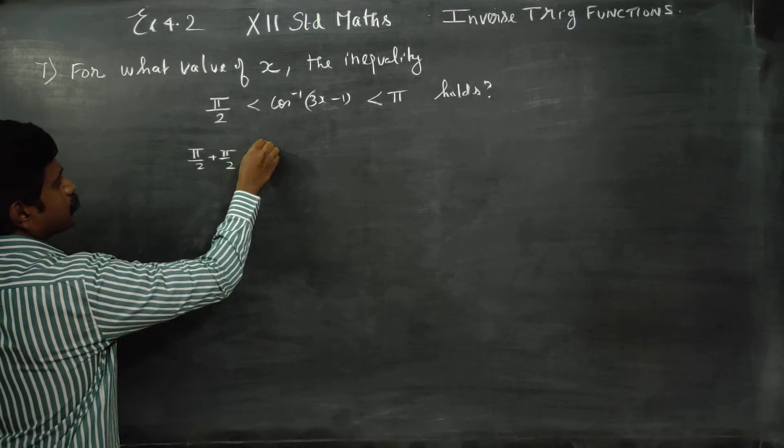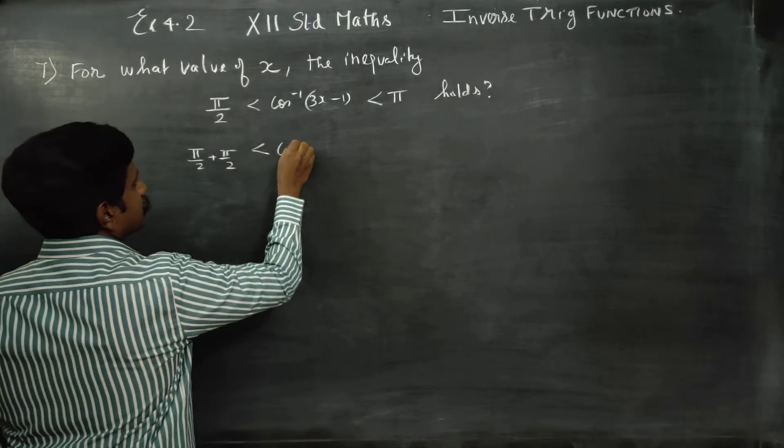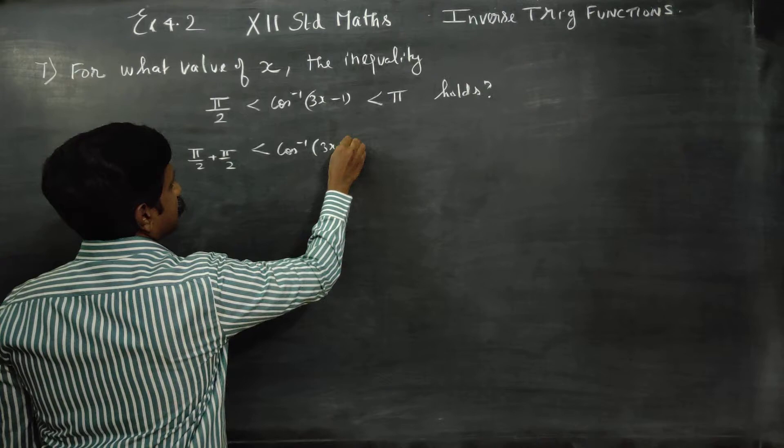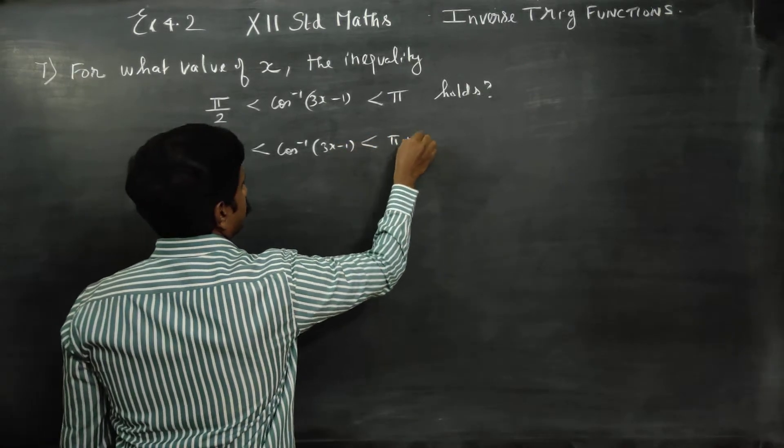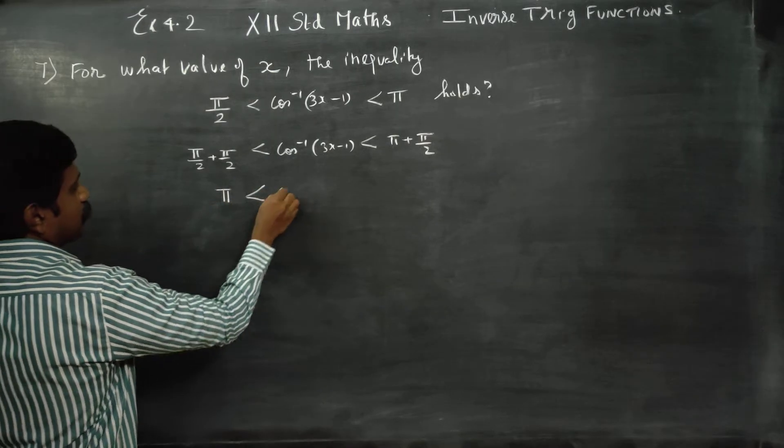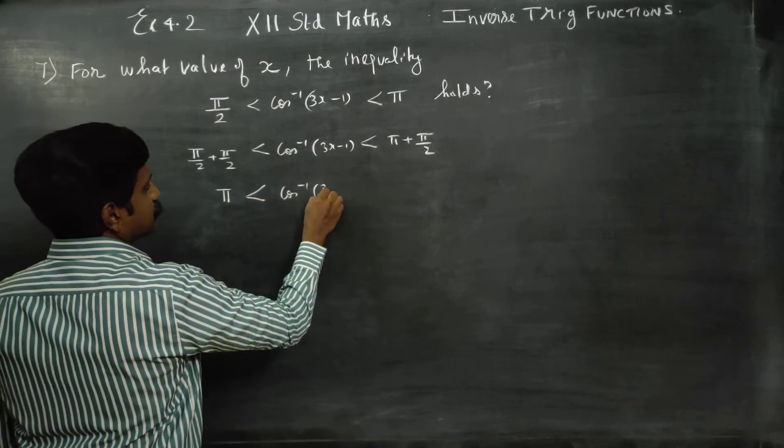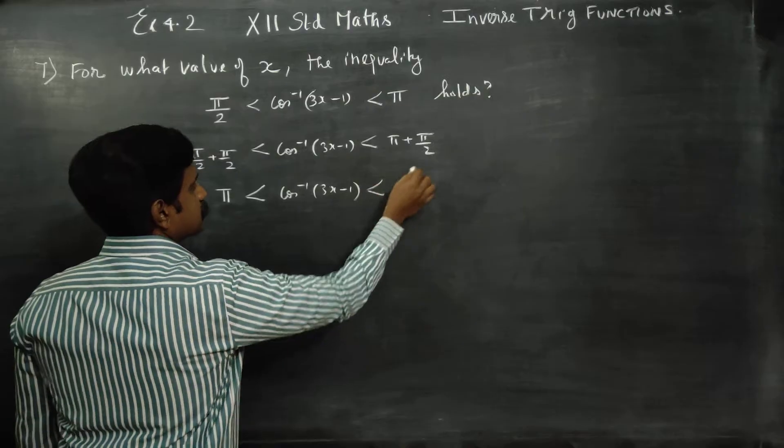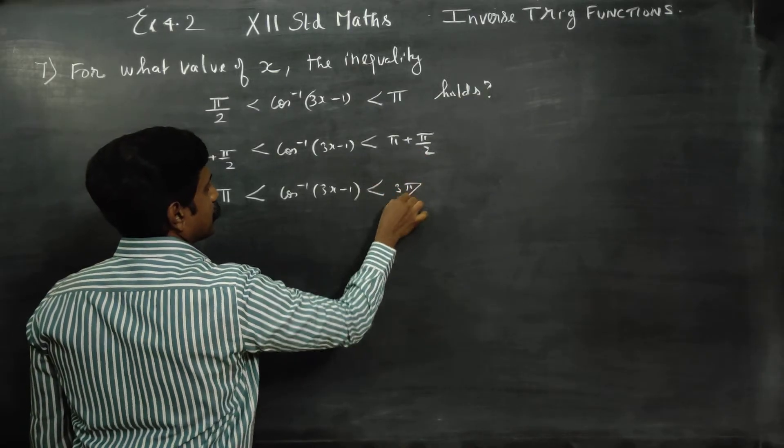So this is π/2 plus π/2 less than cos inverse of 3x minus 1 less than π plus π/2. This is π/2 plus π/2 becomes π less than cos inverse of 3x minus 1 less than 3π by 2.